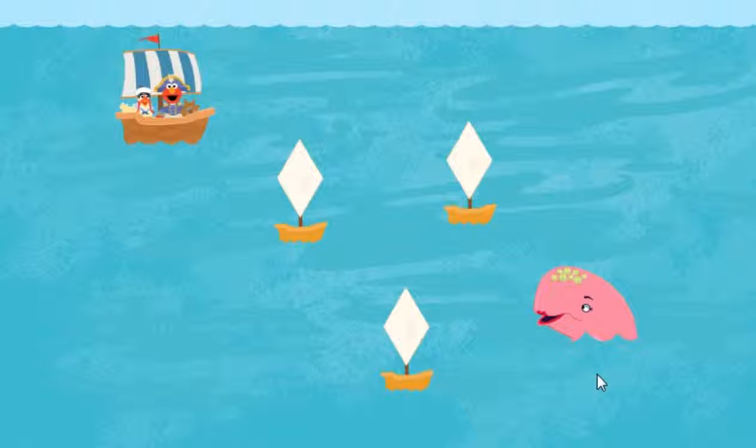A rhombus is shaped like a diamond and has 4 straight sides that are all the same length. Go around the rhombuses to help Captain Elmo get to Moby Pink!